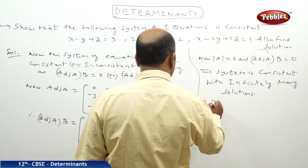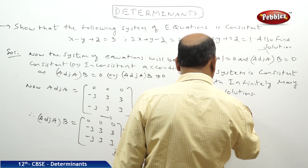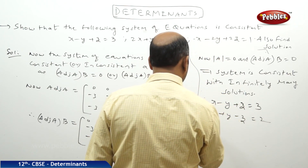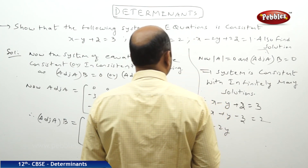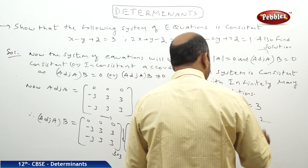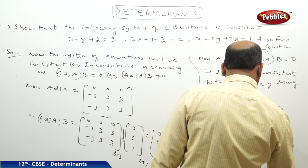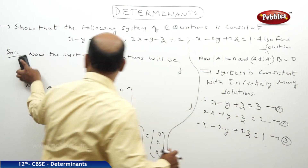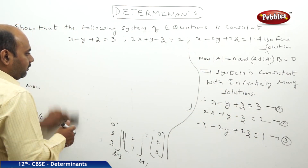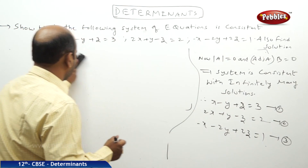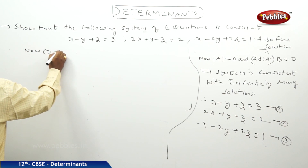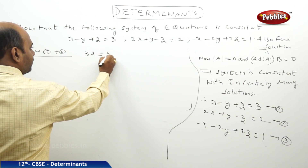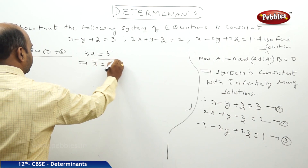Therefore we need to solve the given system: equation 1 is x - y + z = 3, equation 2 is 2x + y - z = 2, and equation 3 is x - 2y + 2z = 1. Adding equations 1 and 2, the y and z terms cancel, giving 3x = 5, so x = 5/3.